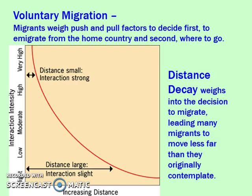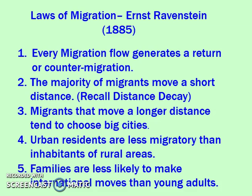Voluntary migration is often connected with the idea of distance decay, which relates to Ravenstein's laws of migration. The idea is that the further the distance, the less likely people are to move — there are fewer connections and interactions. The first law is that the majority of migrants move a short distance. The second law is that with every migration flow, there's a return or counter migration. Examples include the Great Migration with African Americans moving from the South to the North during World War I and then back to the South after the Civil Rights Movement in the 1960s.